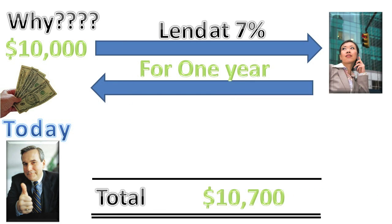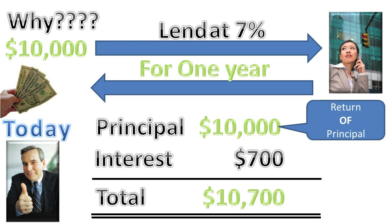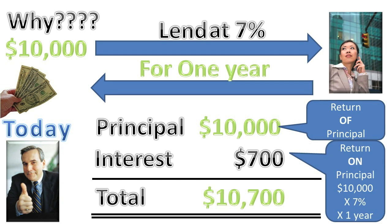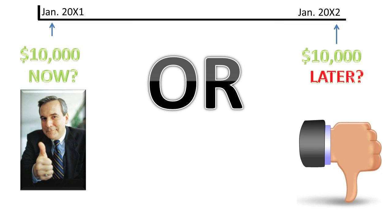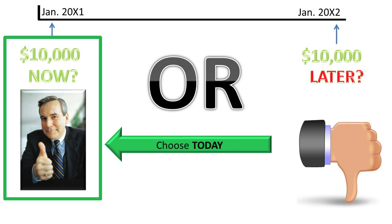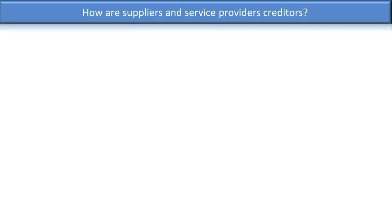If you were to do this and the person were to pay you back as promised, you would have $10,700 a year later — $10,000 return of principal plus $700 return on principal, represented by interest, computed as $10,000 principal times 7% annual interest rate times one year. So if someone gave you the choice to receive $10,000 today or $10,000 a year from now, choose $10,000 today. But if your choice is $10,000 a year from now or nothing at all, go ahead and choose $10,000 a year from now.